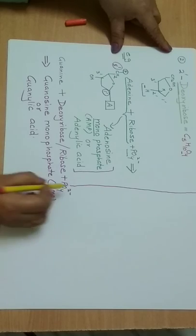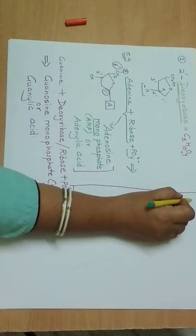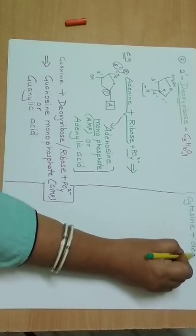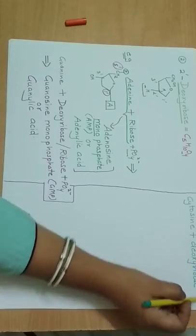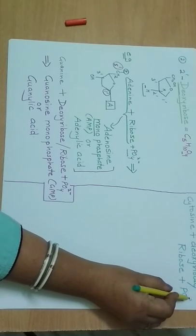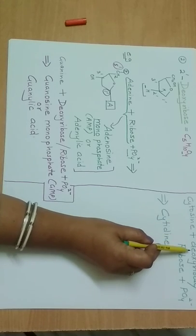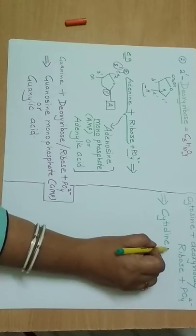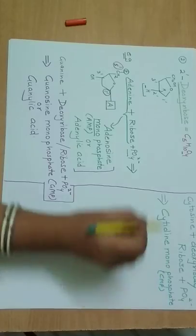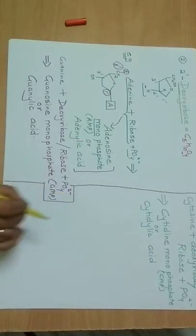Cytosine can bond with either deoxyribose or ribose sugar, plus phosphate, to form cytidine monophosphate, or CMP. This is also known as cytidylic acid.